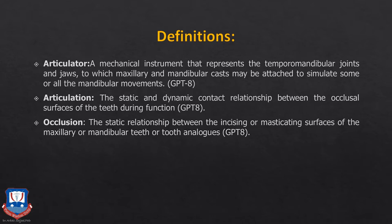Articulation as such is the static and dynamic concept relationship between the occlusal surfaces of the teeth during function. Articulation means the static and dynamic relationship of the patient's teeth or that of the denture teeth. Occlusion as such is the static relationship between the incising — that is, the masticating surface — of the maxillomandibular teeth or the tooth analogs, that is, artificial substitutes of the teeth.